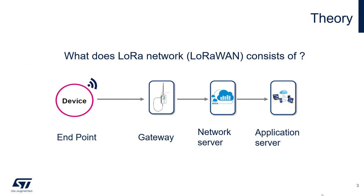What is LoRaWAN? LoRaWAN is not only the radio — radio is only one part. We have four layers of the system. The end point, which is the water meter or flow meter — this is the so-called device, or in old wording you can meet the word 'mote' (M-O-T-E), meaning a really basic, elementary part of a substance. So node, mote, end point, or device — these are the equivalent terms.